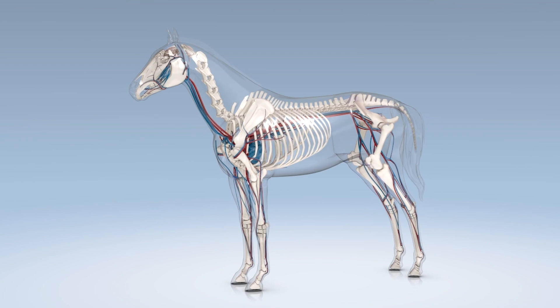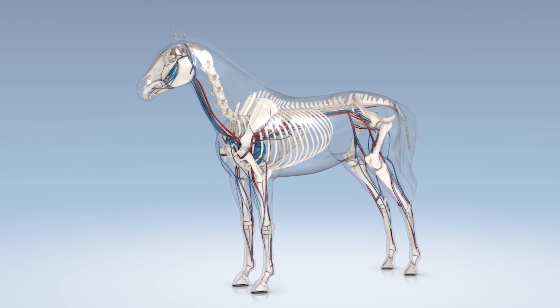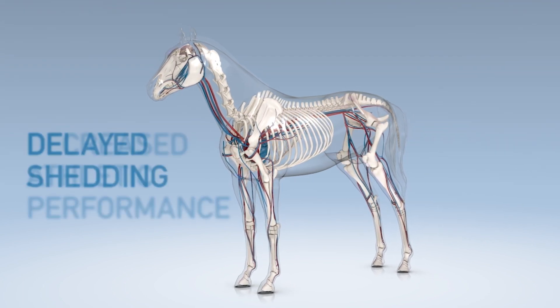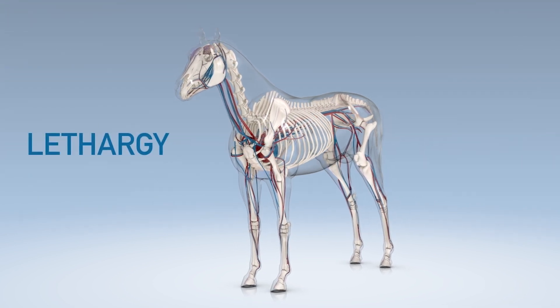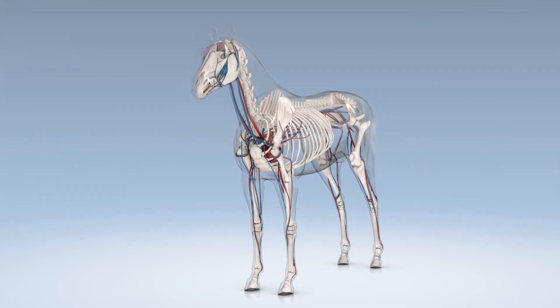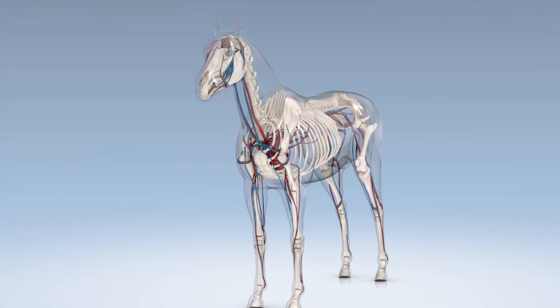Clinical signs can be early or advanced and can include delayed shedding, decreased athletic performance, laminitis, and lethargy. Some early clinical signs can be subtle and PPID may go undiagnosed.